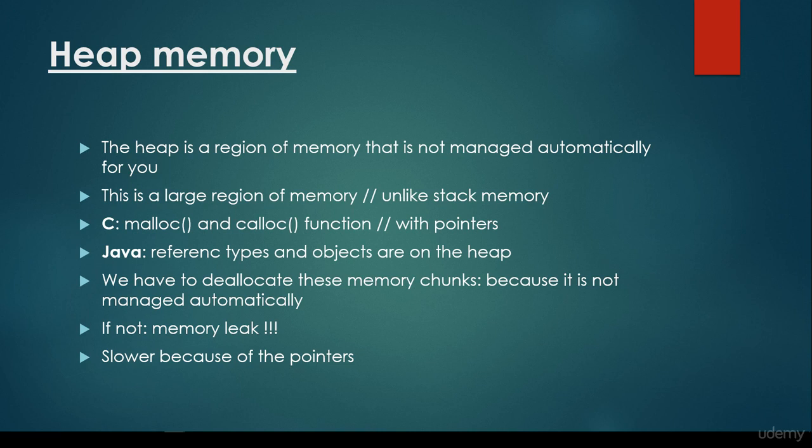For example, when we would like to store a huge matrix, we are going to store that huge data in the heap memory, because the size of stack memory is limited. The stack memory is faster than heap memory, but the size is limited. In Java, reference types and objects are on the heap — whenever we instantiate a class and create an object, it's going to be added to the heap memory.